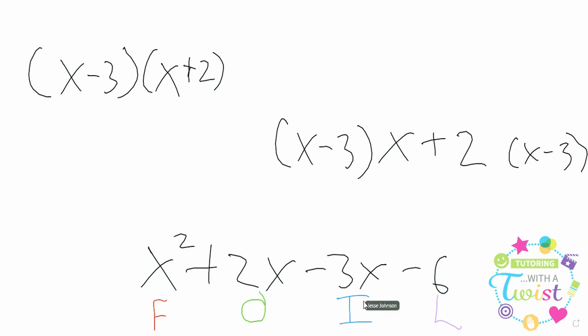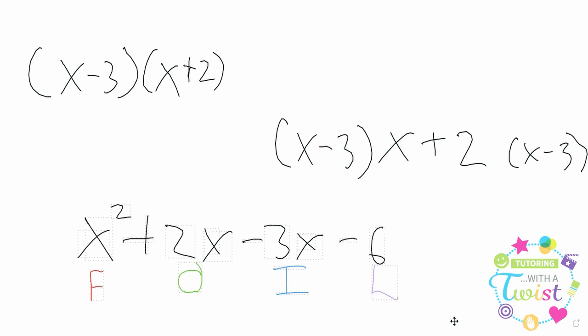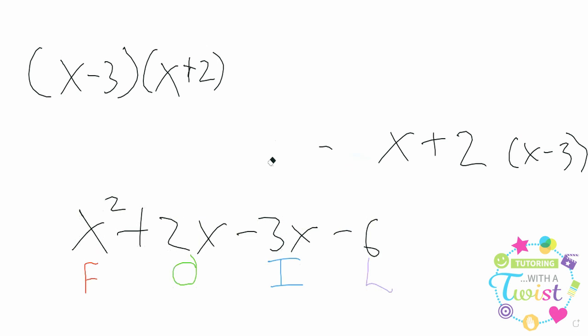Outside, that's that 2 and the x. Inside, that's that negative 3x. And last, that's that negative 6 from the 2 and the 3 put together. But looking at this, maybe we're not quite done, or we're not quite satisfied with what we've got. And why not?